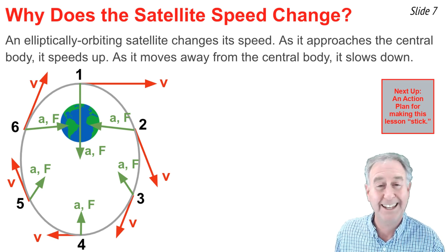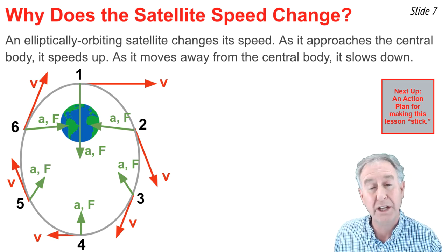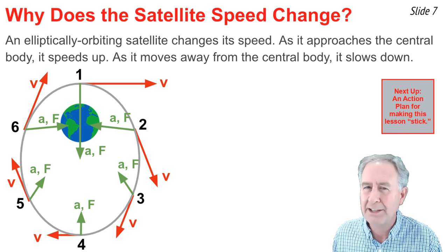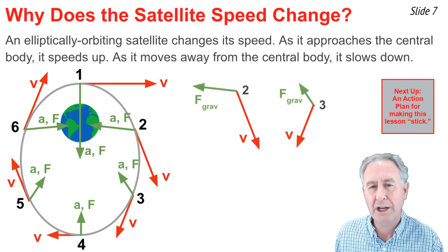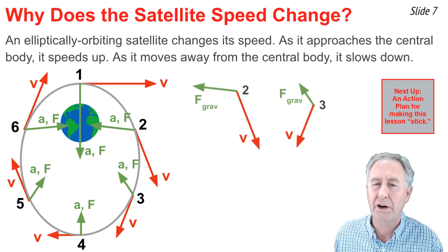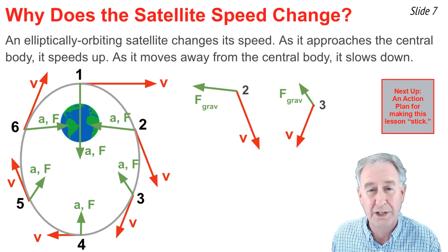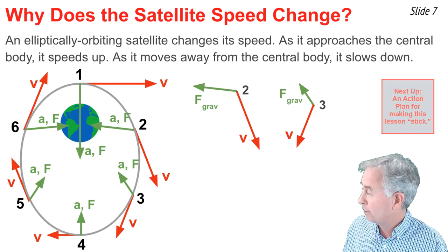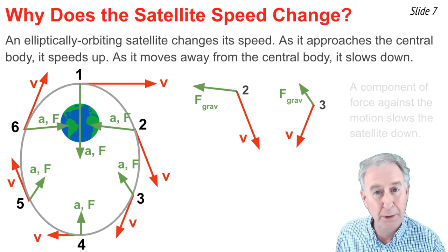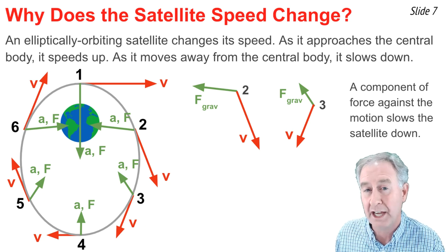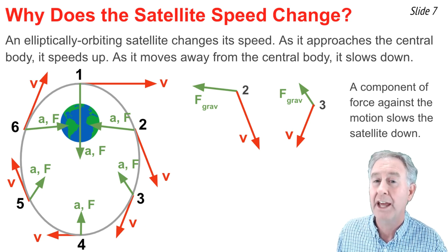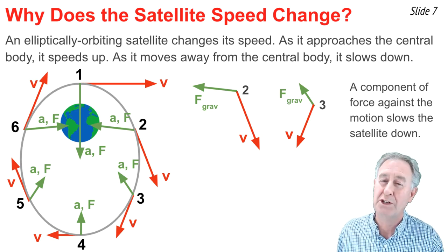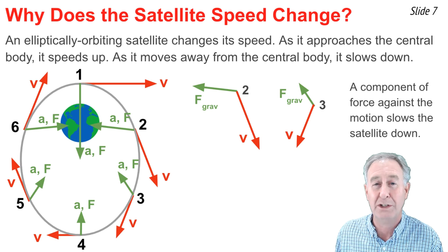One quick and incorrect answer would be to say it's changing its speed in the way it does because the size of the force is changing. But that's not correct. The change in speed from location 1 to location 4 is caused because the direction of the force is opposite the direction of the motion. Not exactly opposite the direction of the motion, but there's a component of the force of gravity that's tugging the satellite back towards the Earth as the satellite's trying to move away from the Earth. And whenever there's a component of force that's against the motion, it causes the satellite to slow down.